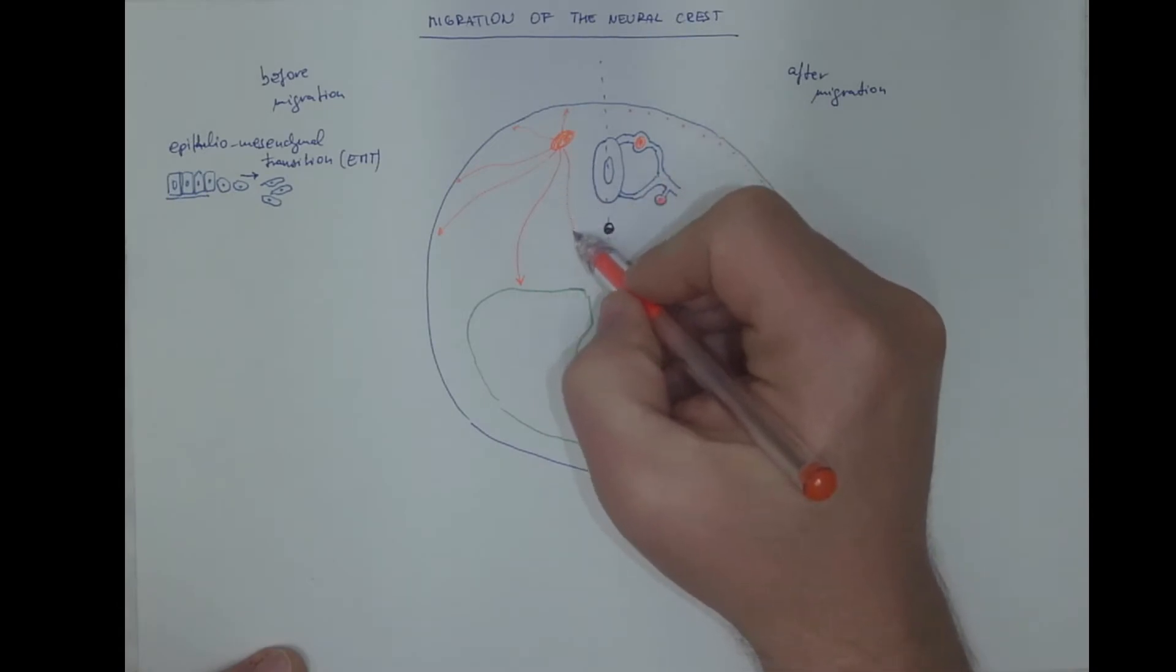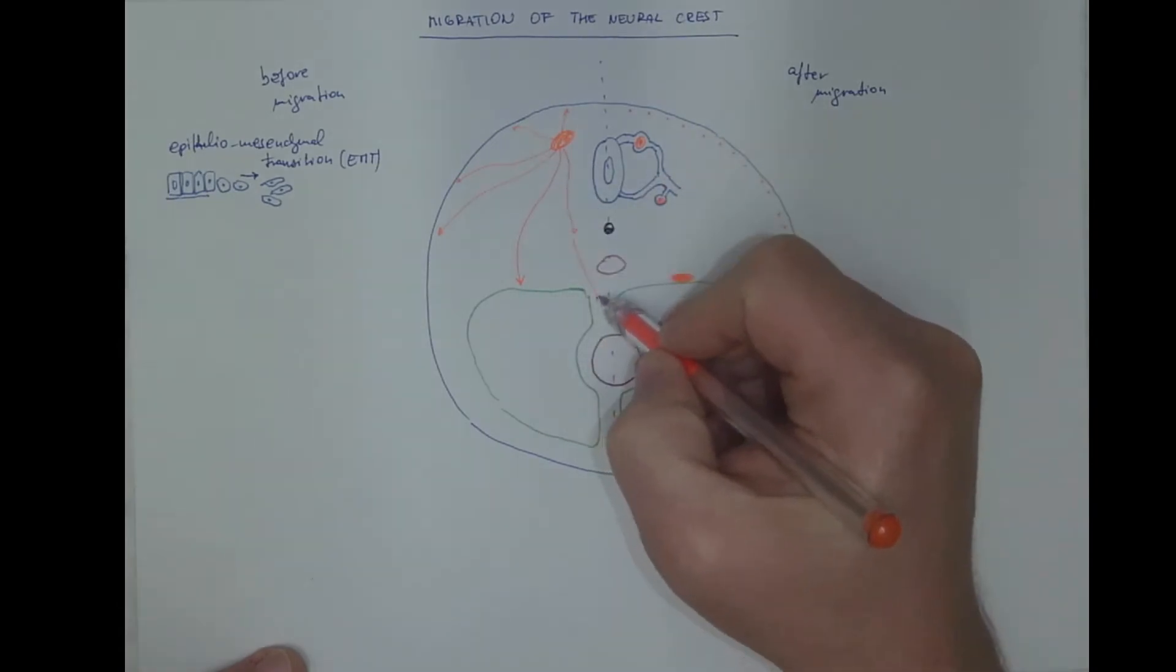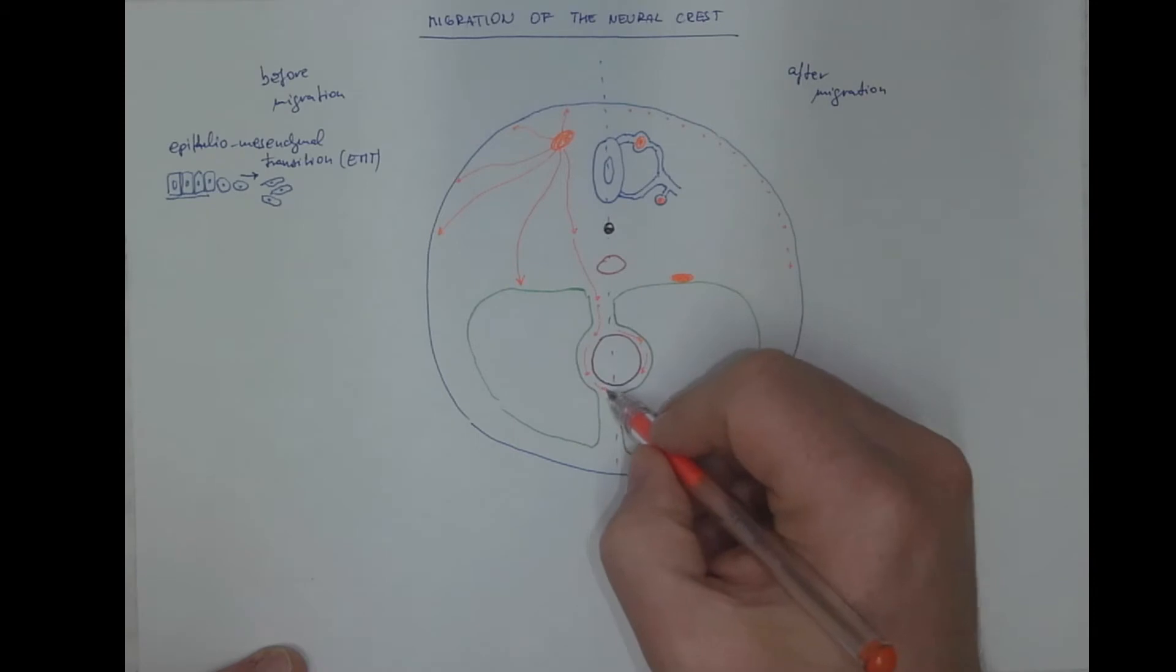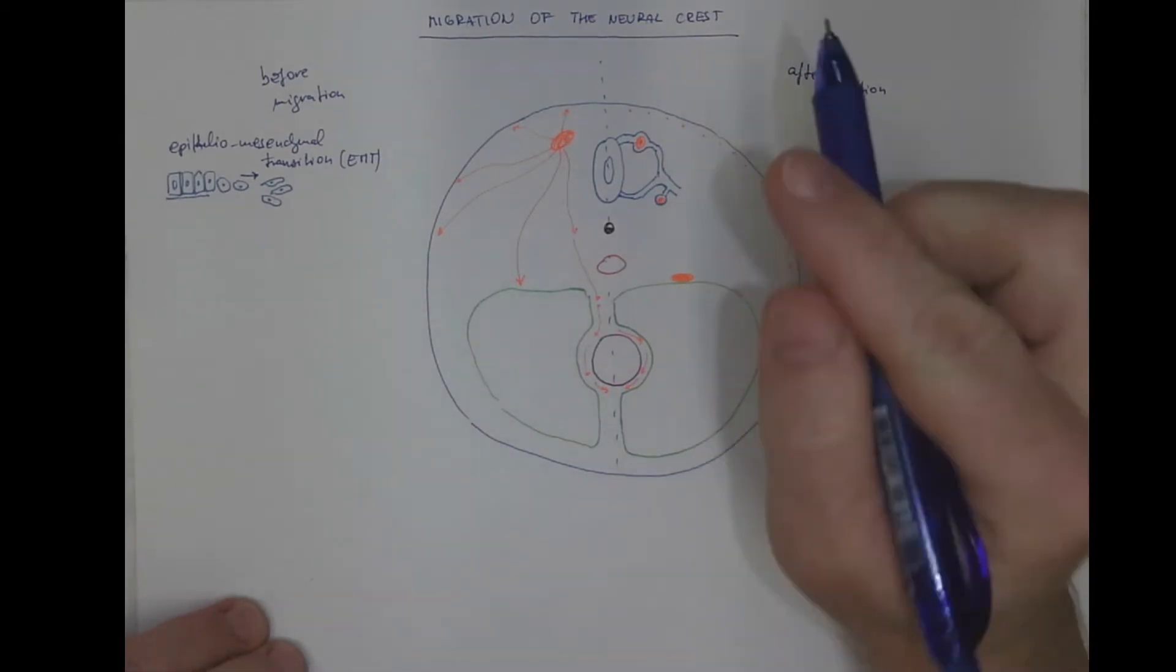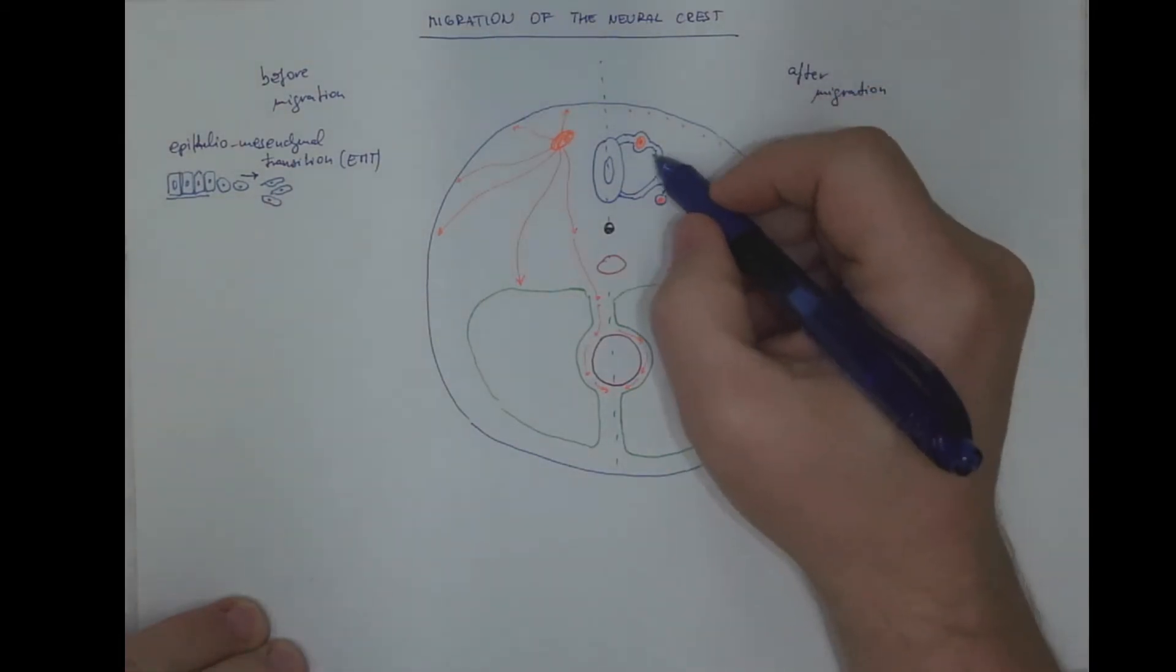Other migration pathways lead to the mesenteries, where the neural crest cells will form the enteric nervous system, the plexuses of the intestine. So let's describe some of these outcomes of the migration. That's the spinal ganglion.